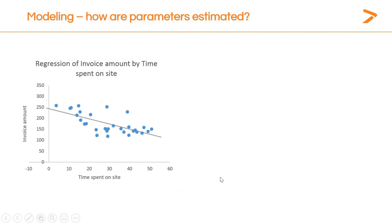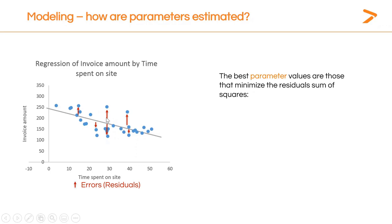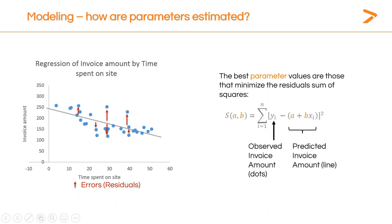The best parameter values are those that minimize the residuals or errors — the differences between observed points and what the line predicts. The best values of A and B minimize the sum of squared errors: Σ(Y − (A + BX))². This procedure is called least squares estimation, and the software does it for you. In simple models the software uses least squares; in more complex models it may use other methods to compute the values of A and B.